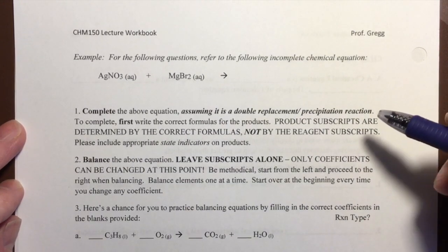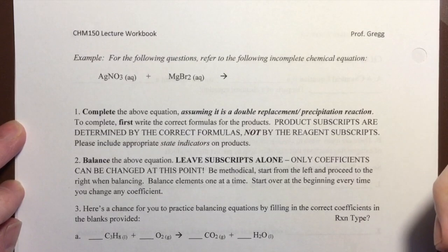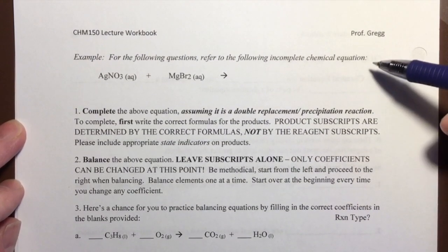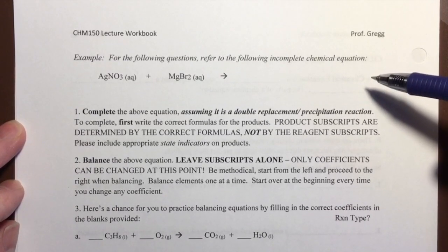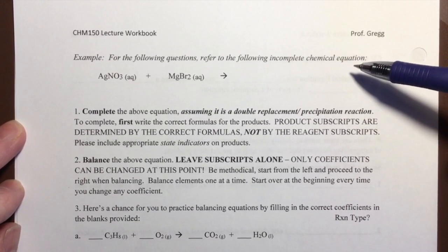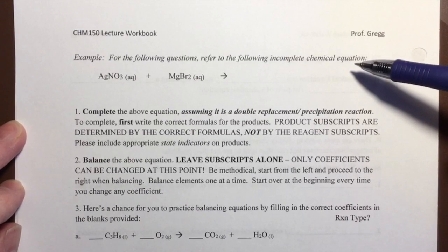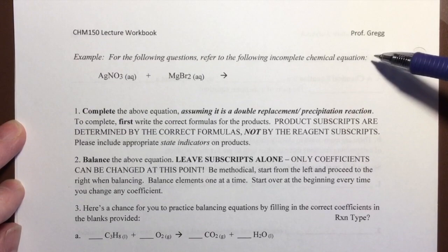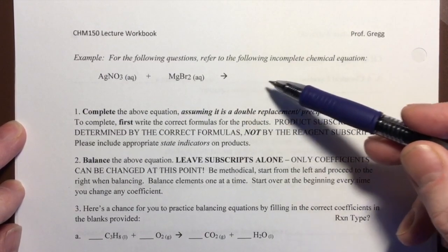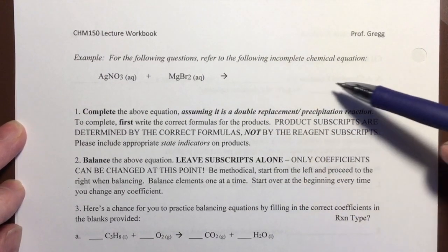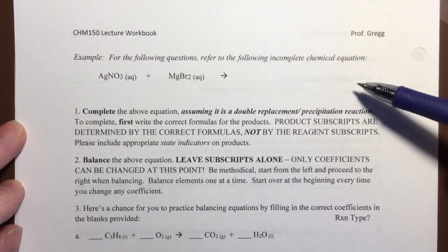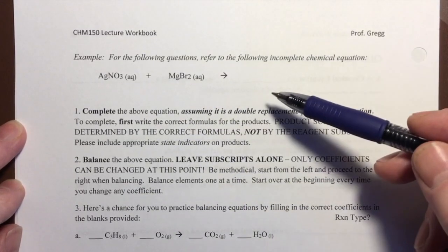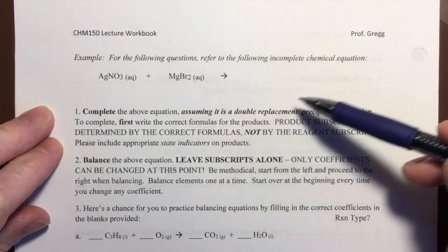Okay, now that we've covered the six basic types of chemical reactions, we're going to do an example problem here. This is a common type of problem that you might be given on an exam, asking you for the following questions or directions. Refer to the following incomplete chemical equation. So you can see we have an incomplete chemical equation. The products are not written. So we are going to have to complete the equation and then balance it. Let's go step by step.